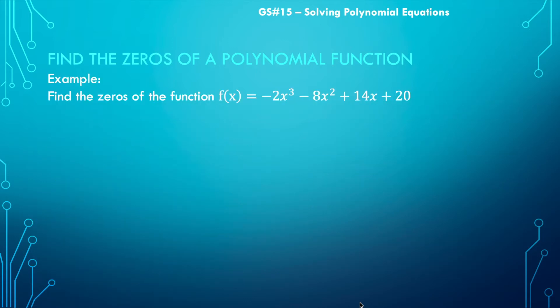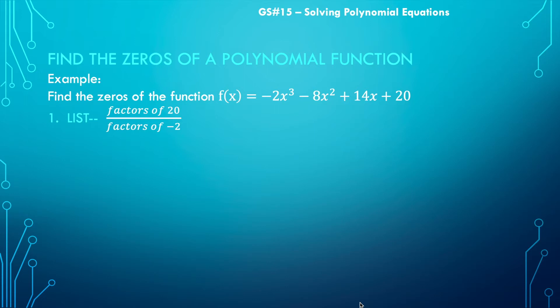First example: find the zeros of the function f(x) = -2x³ - 8x² + 14x + 20. Remember the first thing we want to do is list our possible rational zeros — we're going to list all the factors of 20 divided by all the factors of -2.